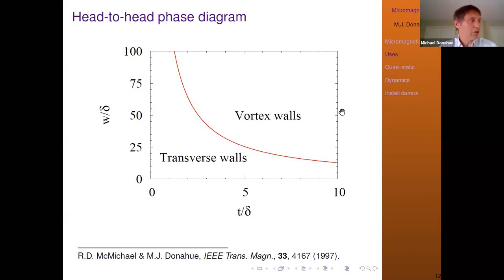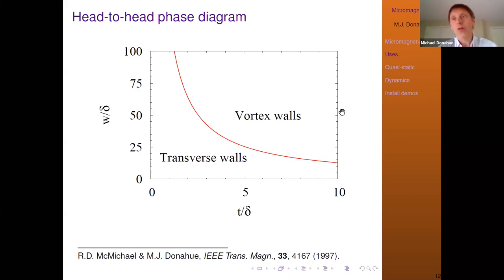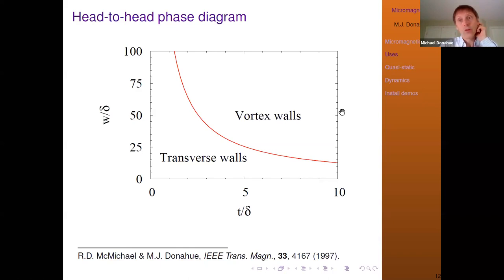A question: magnetization must obey Maxwell's equations — where are those in the dynamics model? Those are built into Brown's equations, which I will get to a little bit later. Let me move on with the talk.